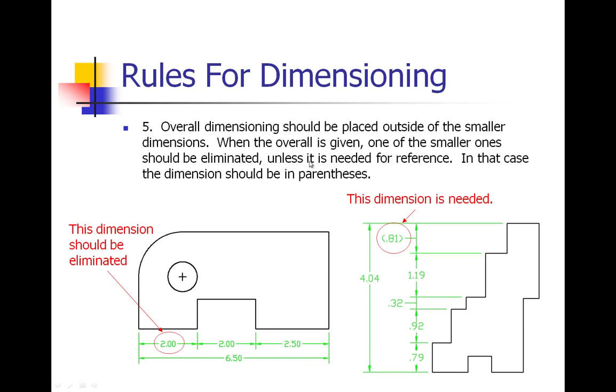Unless it is needed for a reference, and in that case it should be put in brackets. We have an overall dimension of 4.04, and because there are so many little stair steps here, it would take significant time to calculate this, so it's faster to just put that last dimension in brackets. That will help the machinist or whoever is manufacturing this part.